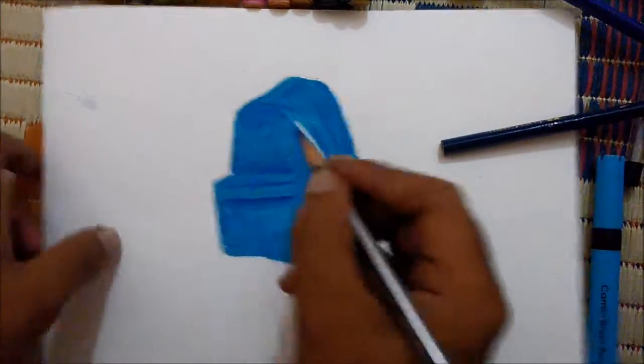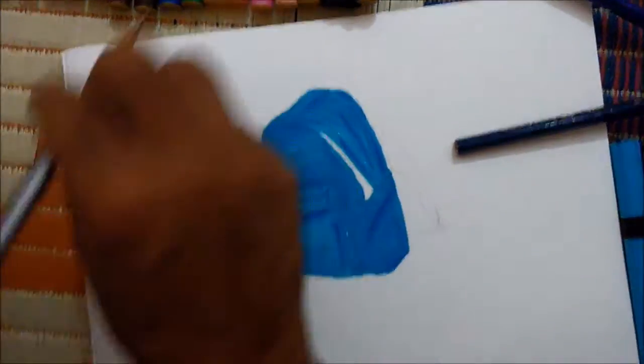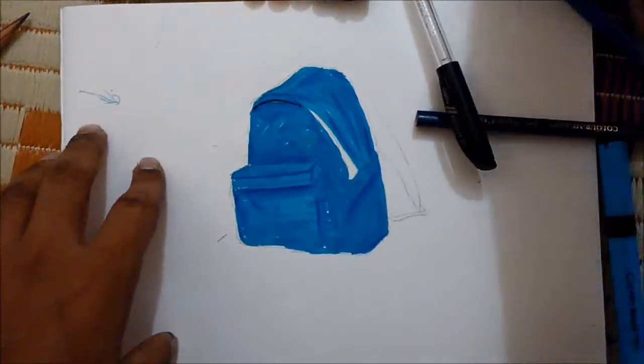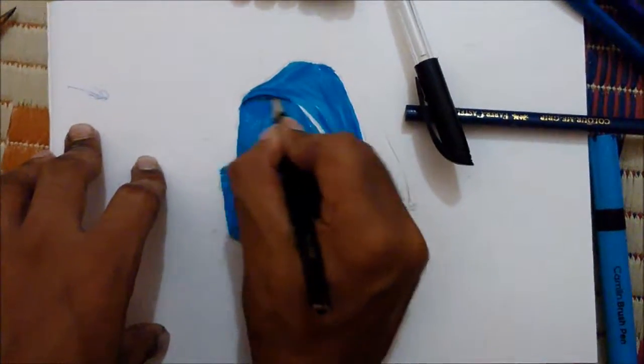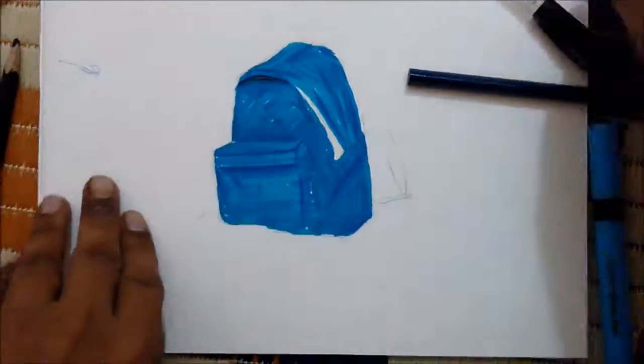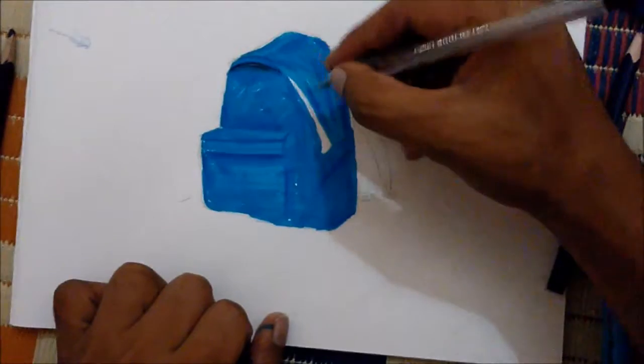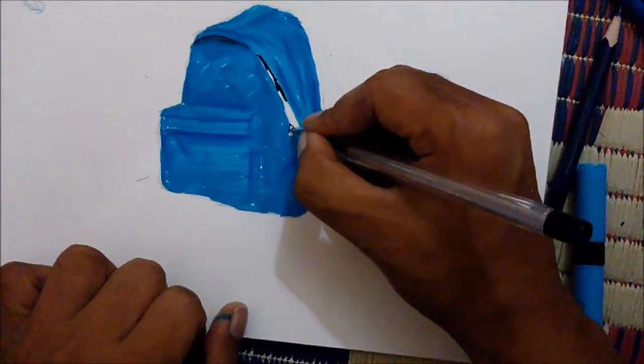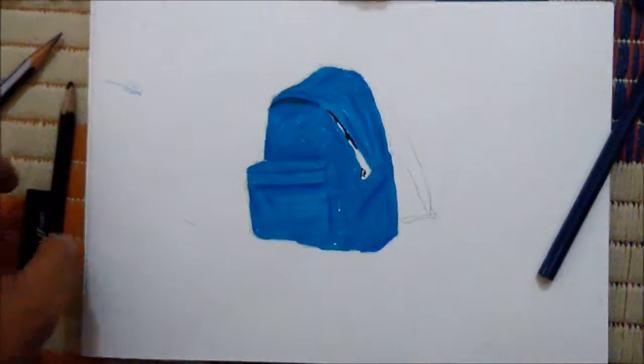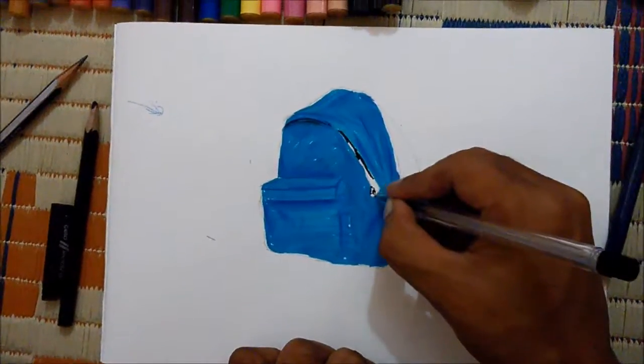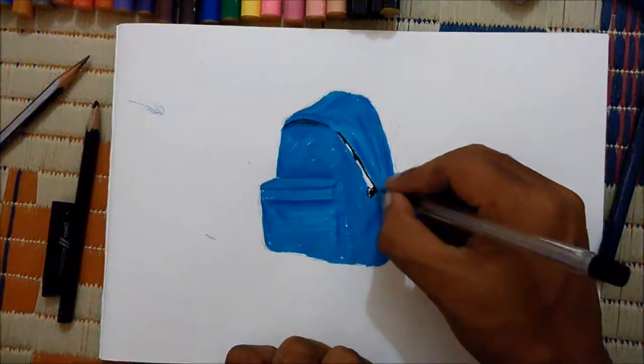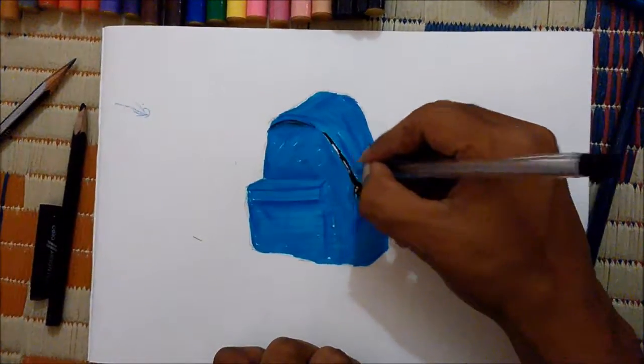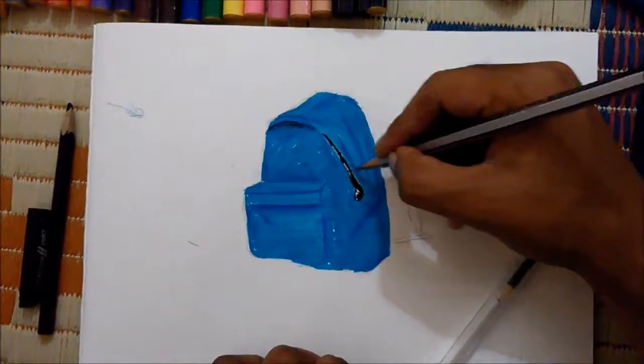Now with your black color pencil, blend this color. Okay, fine. Now draw the zip. Paint this with lights and shadows. That will give you a realistic look for your drawings. Give small shadings here.